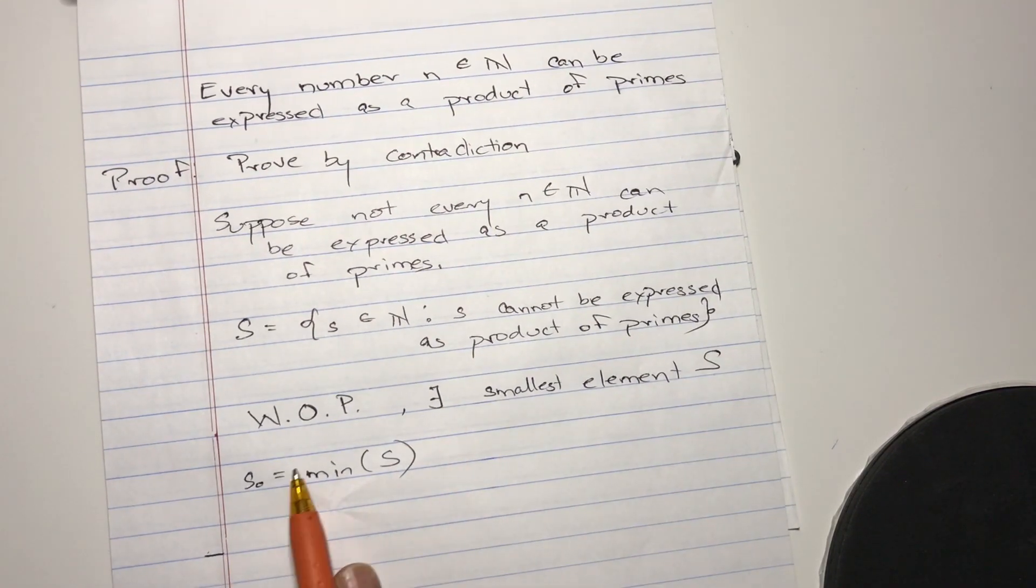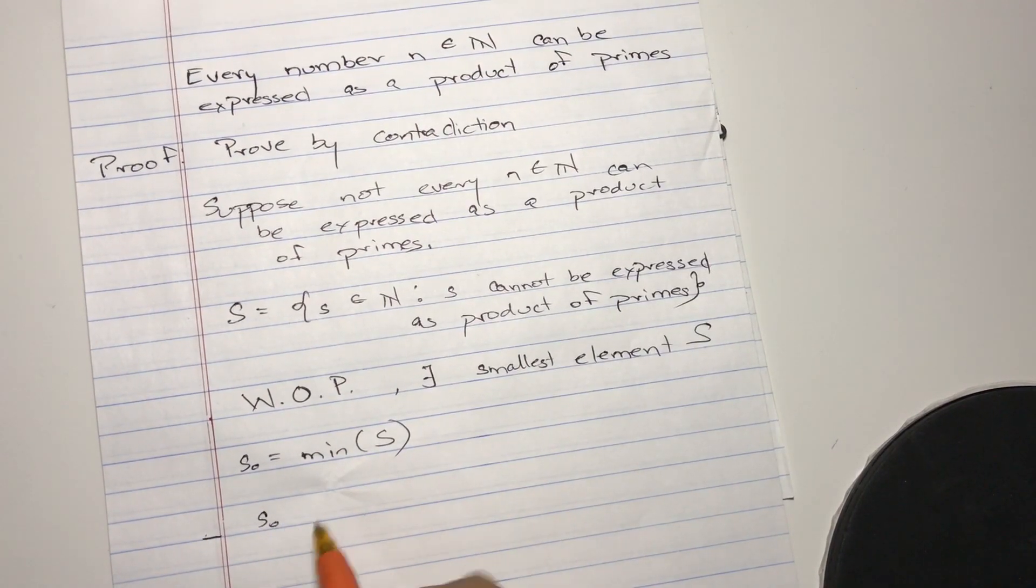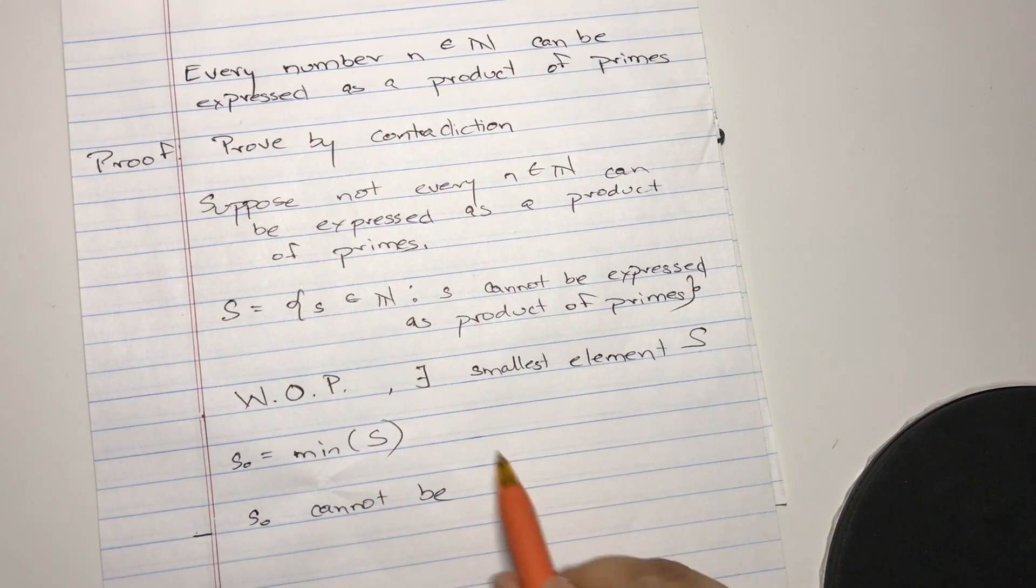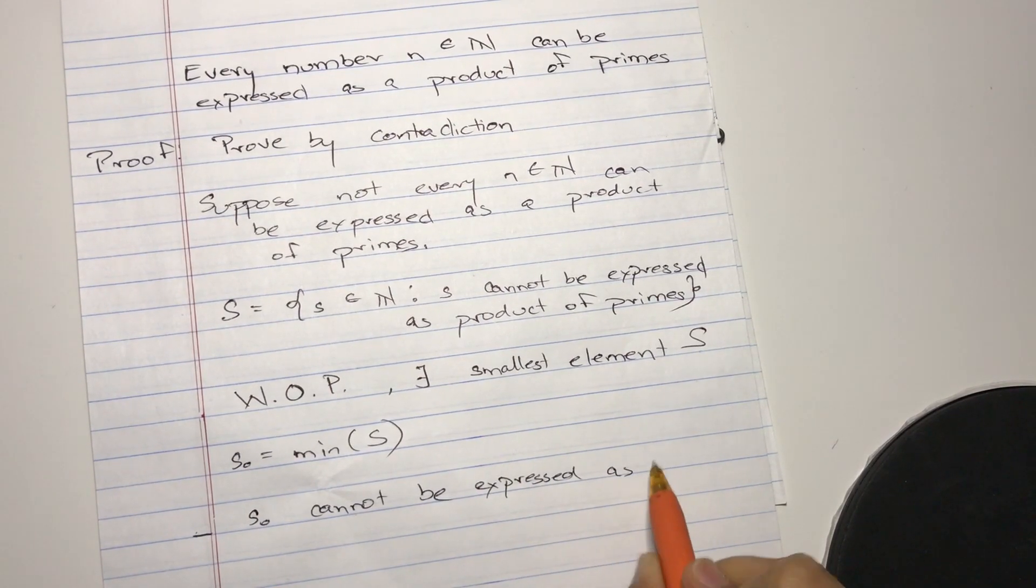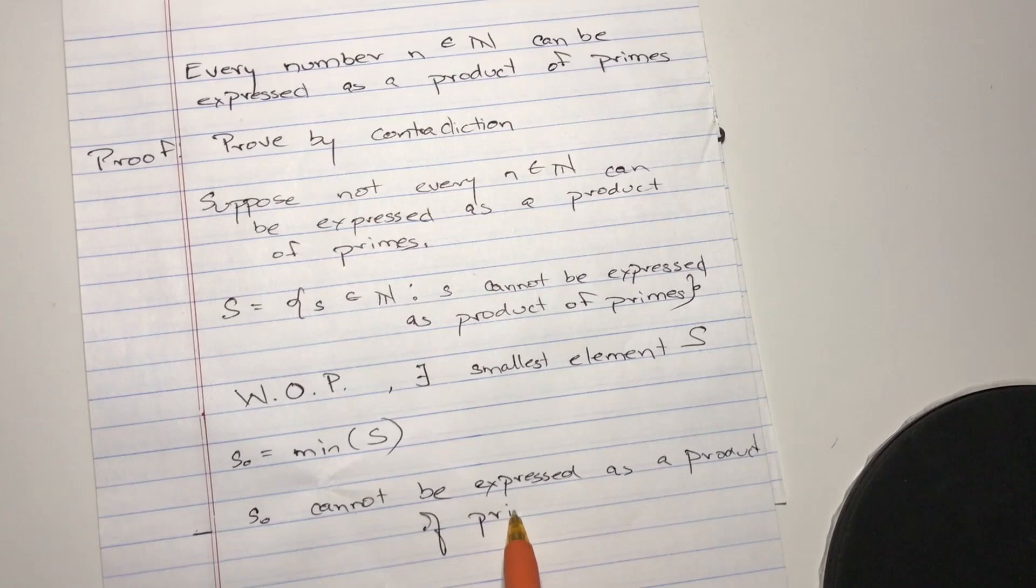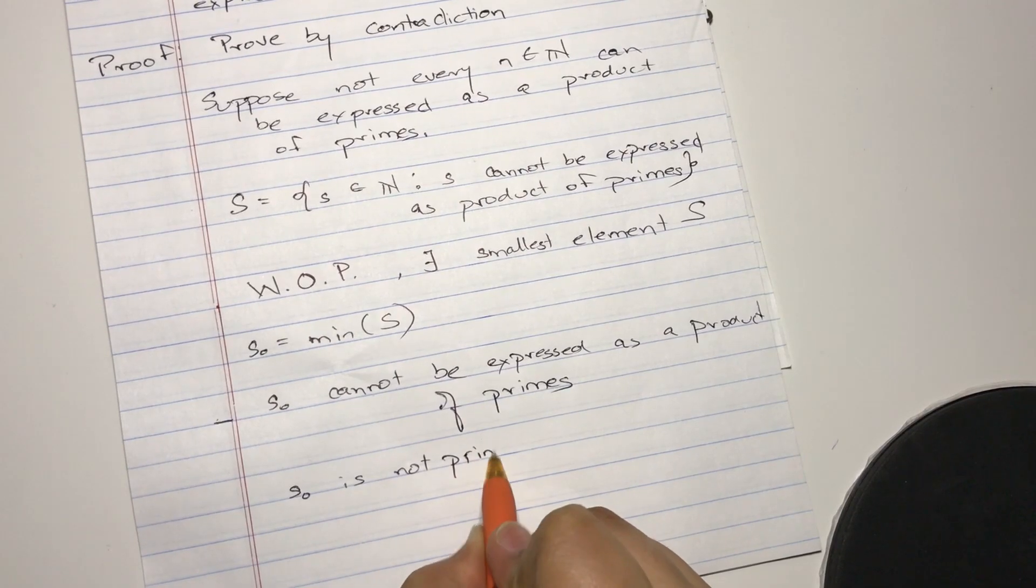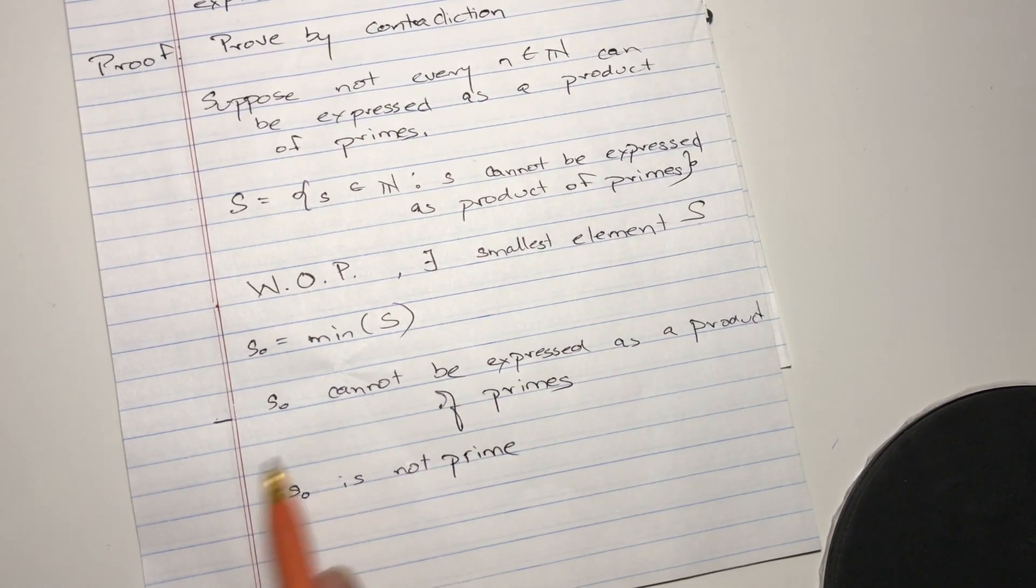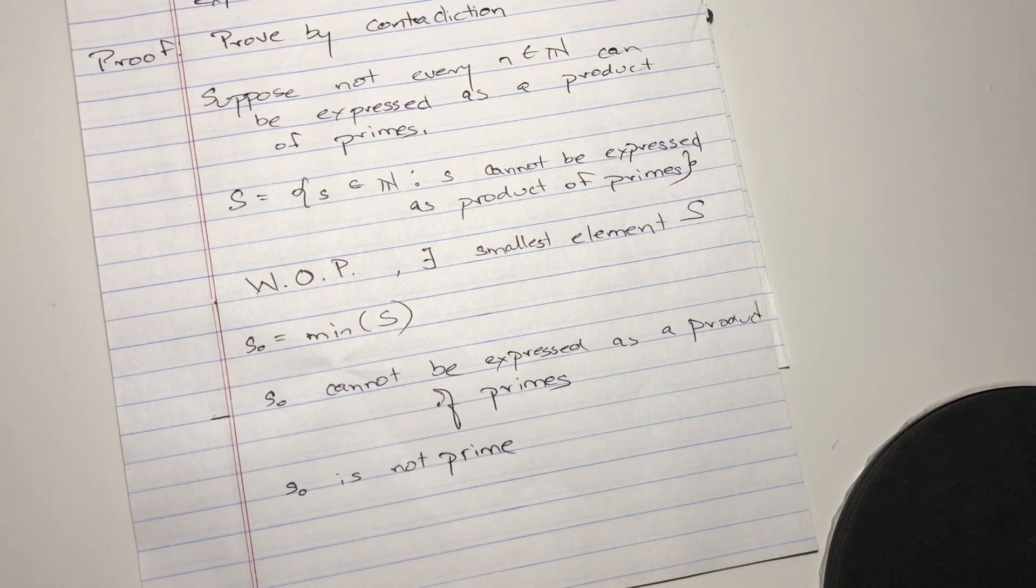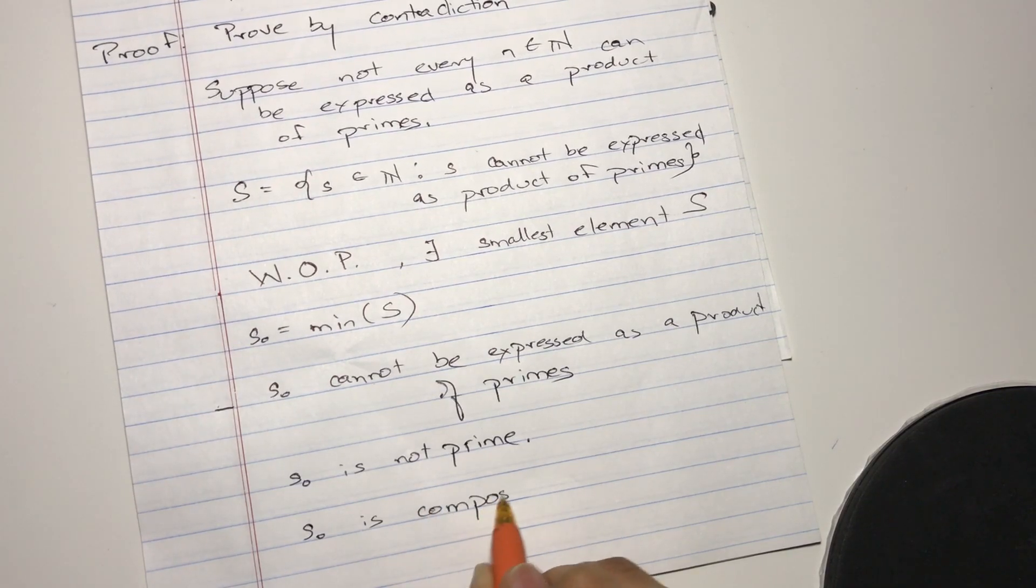So according to the set and the WOP, S_0 cannot be expressed as a product of primes. Let me write that, expressed as a product of primes. Now, what does this mean? That means S_0 is not a prime because if it were, S_0 could be expressed as a product of prime, like one times that prime itself, S_0. So S_0 is not a prime, so S_0 is a composite number.